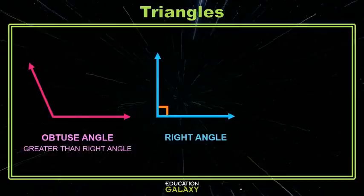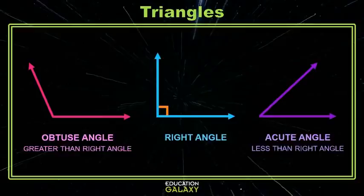So, what are the ones called that are smaller? They don't open quite as far as a right angle. Well, they're called acute angles.